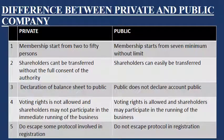Differences between private and public company: 1. Private membership starts from 2 to 50 persons while public membership starts from 7 minimum without limit. 2. Private shareholders cannot be transferred without the full consent of the authority, while public shareholders can easily be transferred. 3. Private has declaration of balance sheet to the public while public does not declare accounts publicly. 4. In private, voting rights are not allowed and shareholders may not participate in the immediate running of the business, while in public, voting rights are allowed and shareholders may participate. 5. Private companies escape some protocol involved in registration while public companies do not.